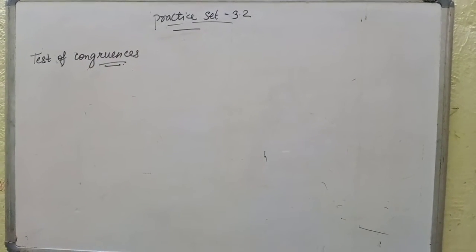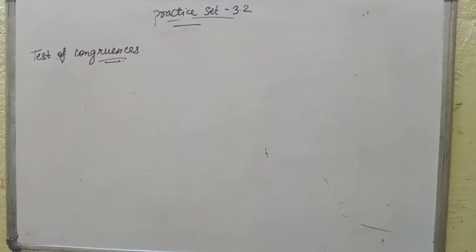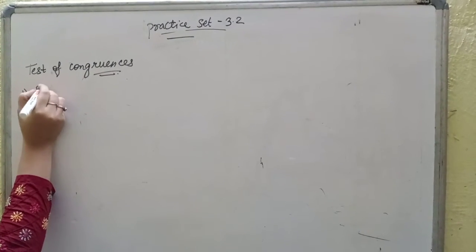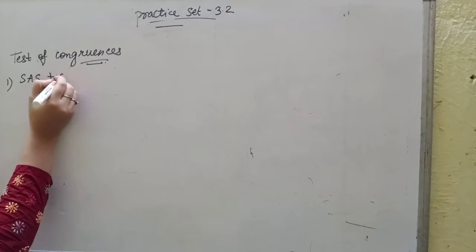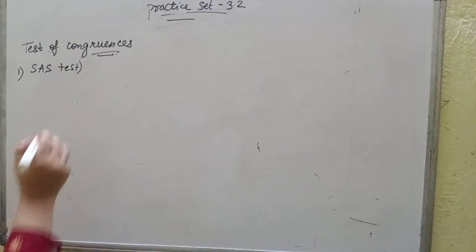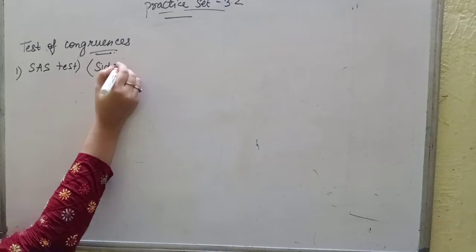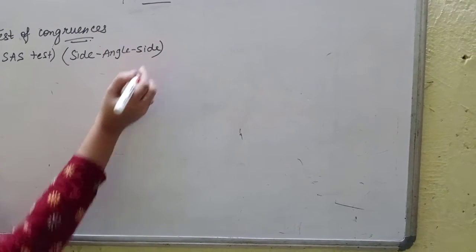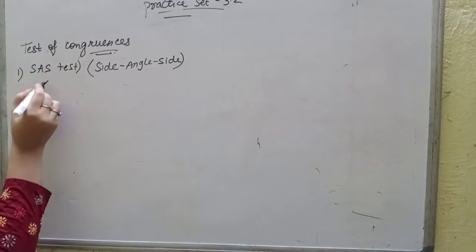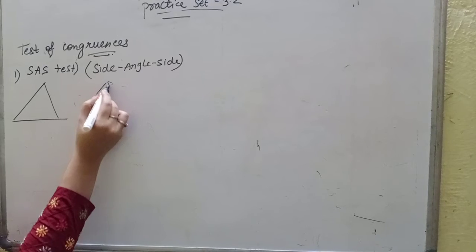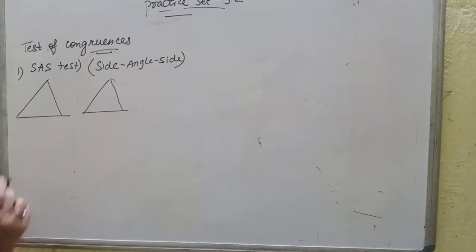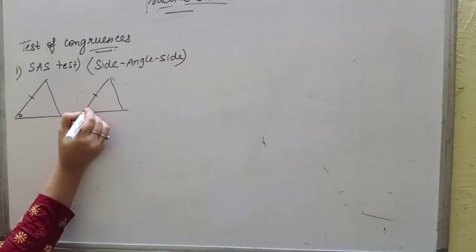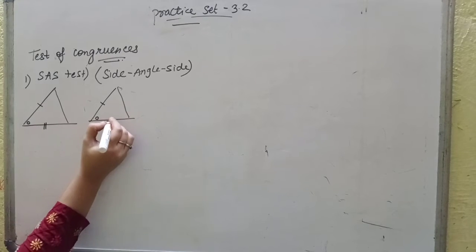There are 5 tests of congruences. First one is SAS test. What do you mean by SAS test? Side-Angle-Side test. This means that two triangles are given. Here we are saying that this side is the same side, this side is the same side, and this angle is the same angle.